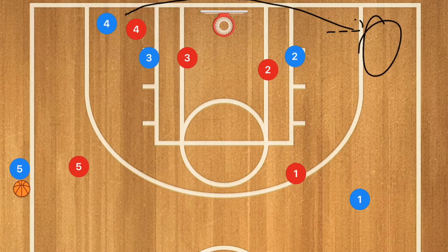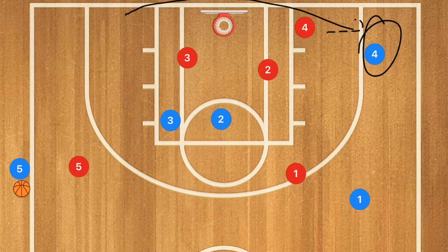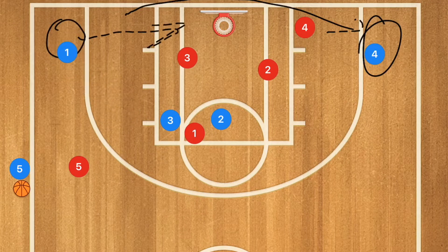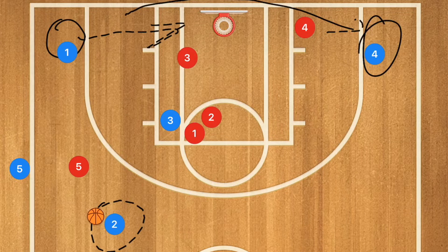We're going to start with player four cutting baseline out towards the right side. Player three is going to have a screen set up for player two, who will use that screen, but also for player one. Player one is going to use that screen first, popping down as the secondary option in case player two ends up not being open at the point.